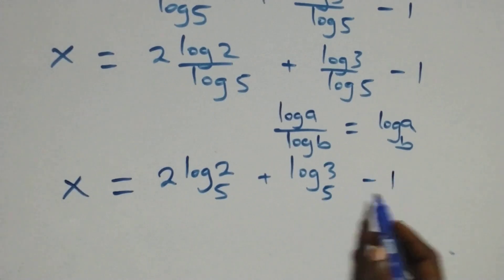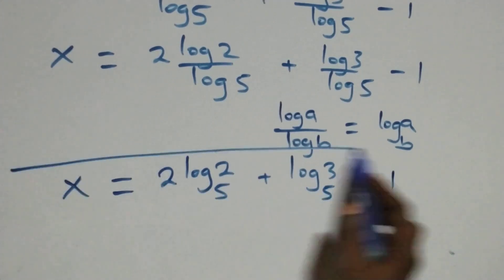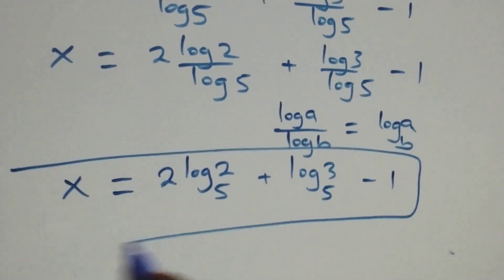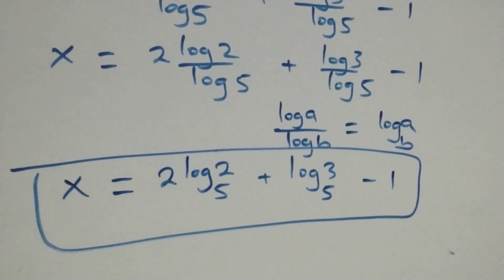We have the value of x in this problem as 2 log₅2 plus log₅3 minus 1.